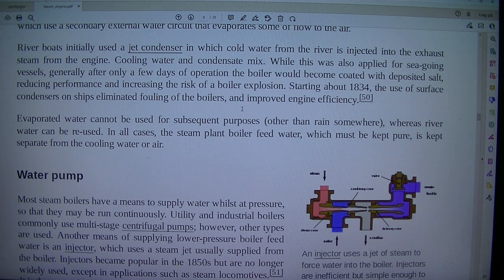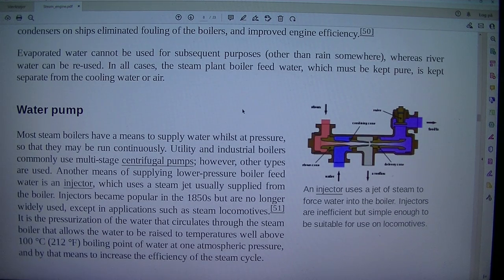Evaporated water cannot be used for subsequent purposes other than rain somewhere, whereas river water can be reused. In all cases, the steam plant boiler feed water, which must be kept pure, is kept separate from the cooling water or air.